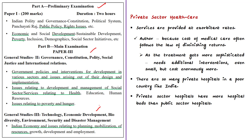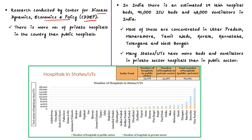The cost of medical care often follows the law of diminishing returns — a point at which the level of profits or benefits gained is less than the amount of money or energy invested. As treatment gets more sophisticated, it needs additional interventions, increasing the cost. There are more private hospitals than public hospitals in India. Private sector hospitals also have more hospital beds than public sector hospitals, based on research conducted by the Center for Disease Dynamics, Economics and Policy.